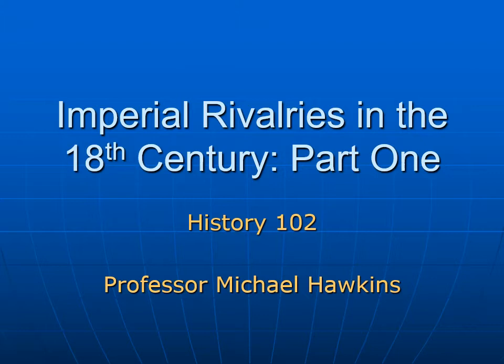Now in this lecture and a follow-up part two on imperial rivalries in the 18th century, we're going to talk about how those empires evolved in the 1700s. We have an opportunity to emphasize that of the three — the Spanish, the French, and the English — the English will be the most successful, powerful, and populous, and the seedbed and foundation of the American nation. By the end of the 1700s, the English Empire clearly eclipses the French and Spanish, and out of that empire will come the American Revolution and the formation of the United States.